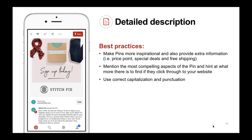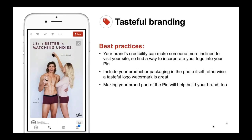Lydia also mentioned that sign-up is often a requirement for one tap pins to include in the first couple lines of the description. As you can see with Stitch Fix, it says 'sign up for Stitch Fix' within the second line. Detailed descriptions are also a great place to provide price points, special deals, and offers like free shipping. Try to put your most compelling aspects within the description — you have up to 500 characters, and the sweet spot really lies within 200 to 400 characters.